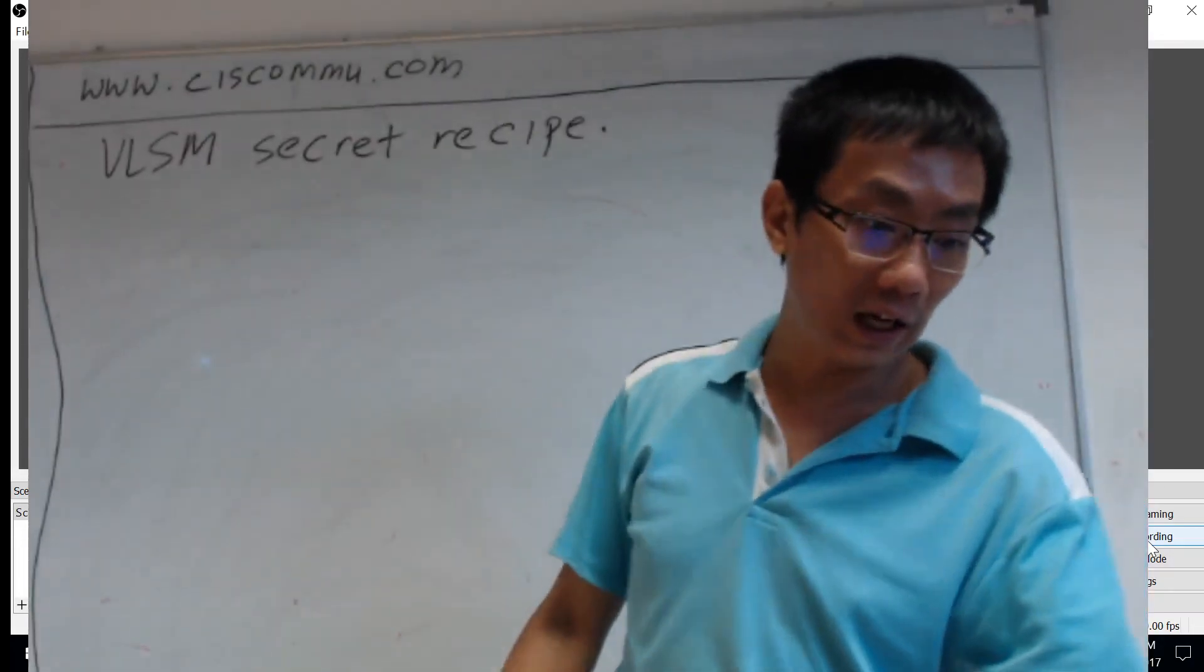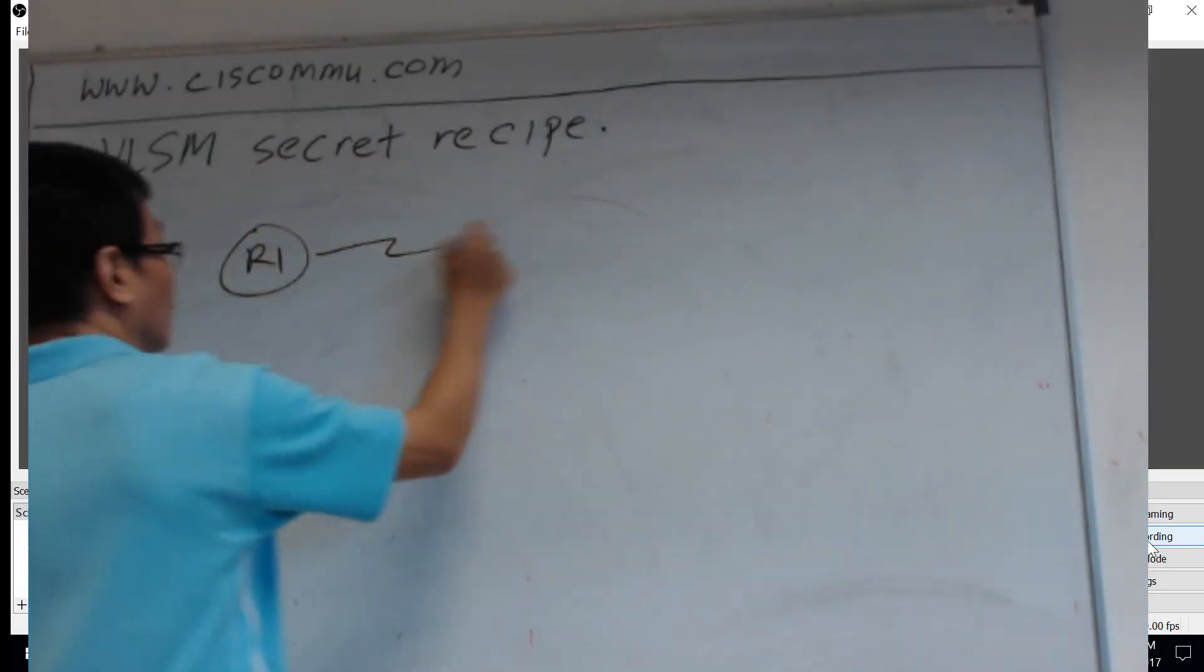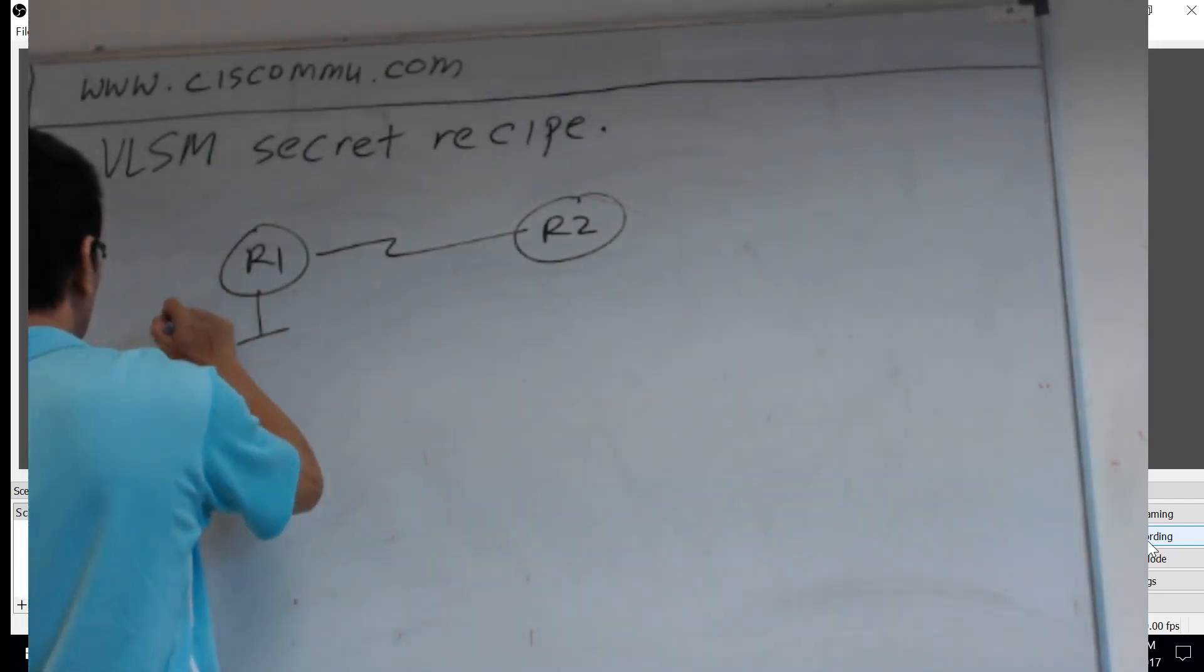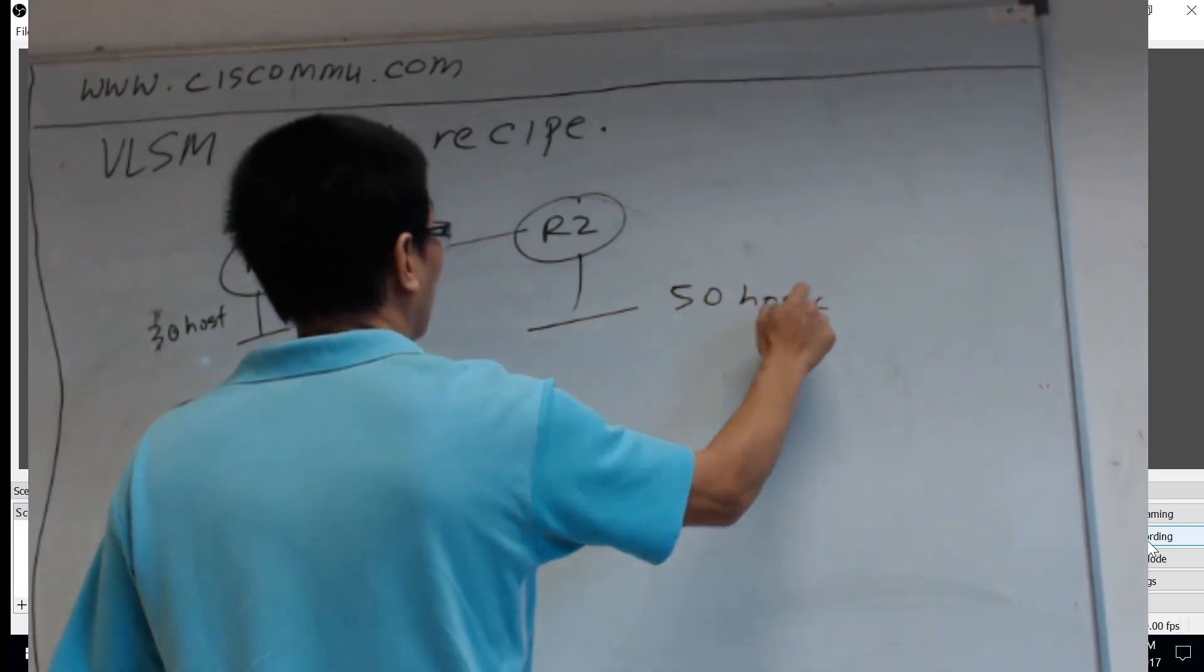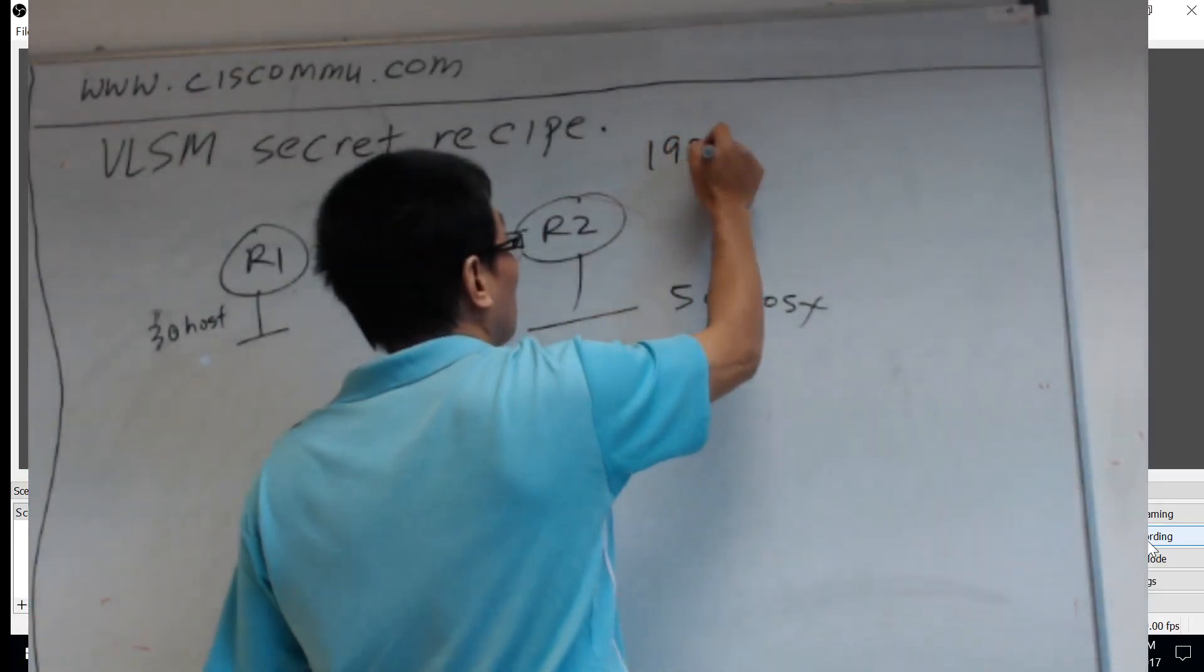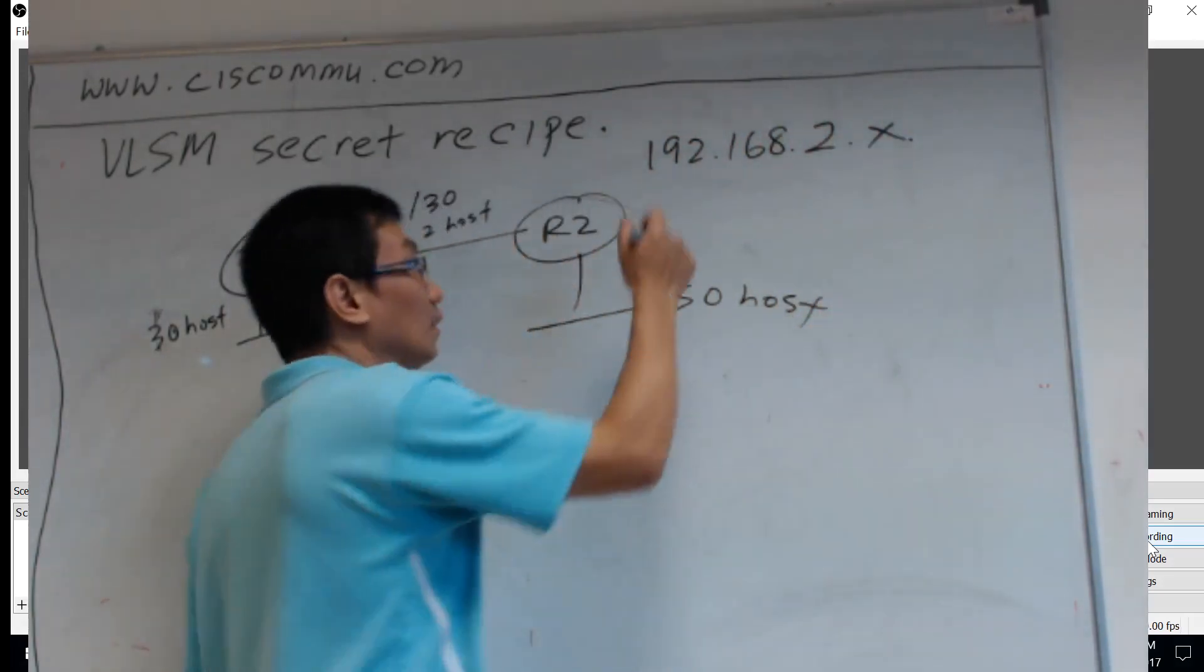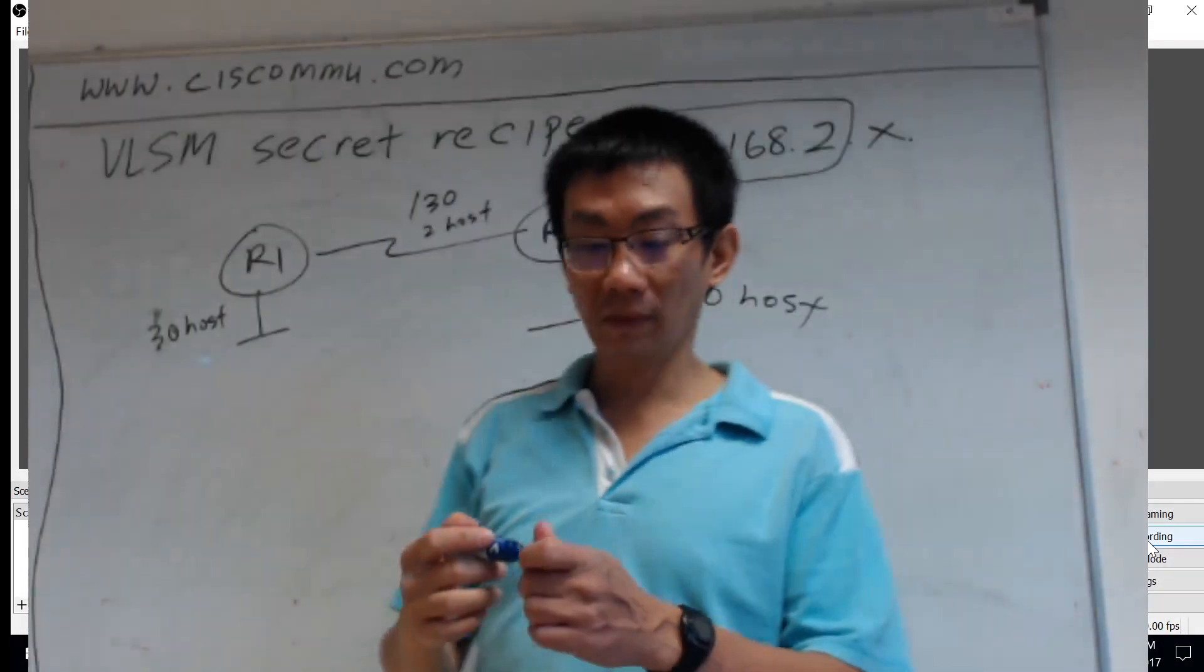Let's give a simple example. We have one router, and over here let's say we have 30 hosts. And over here, let's say 50 hosts. And here, let's say 2 hosts. And the restriction is that everything must start with 192.168.2.x. You must have this for your network. How do you do that?